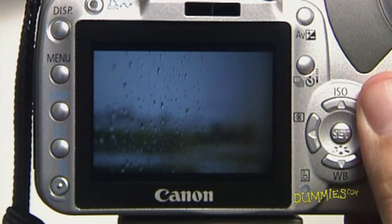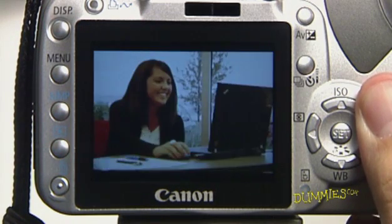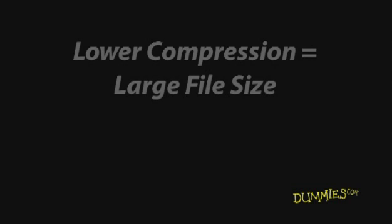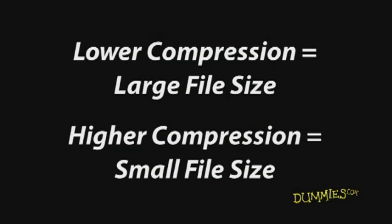Many cameras offer image quality settings such as Good, Better, and Best. These settings reflect the compression level of the photos saved in your camera in the JPEG file format. Compression refers to the amount of image your camera collects when taking a photo. The lower the compression, the larger the file size and the more detail you get in the photo. Higher compression eliminates some of the image data in order to reduce its size.